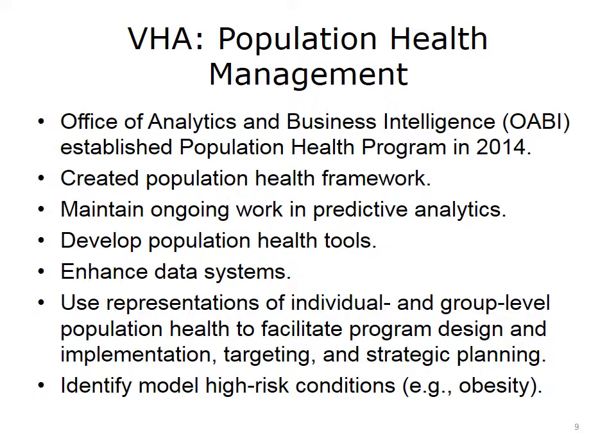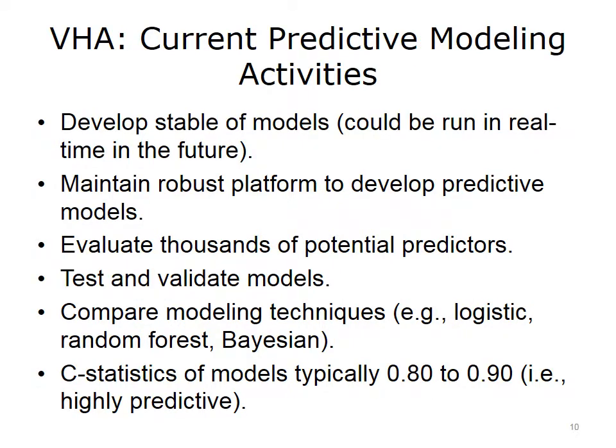VHA's OABI developed a series of high-impact population health models to identify high-risk conditions, such as long-term obesity. Current predictive modeling activities at the VHA include the development of a stable of models that could be run in real time in the future, the development of robust platforms to develop predictive models, the evaluation of thousands of potential predictors, model testing and validation, comparisons of modeling techniques such as logistic, random forest, and Bayesian models, and developing models that typically have high predictive powers, with usually C statistics of 0.80 to 0.90.